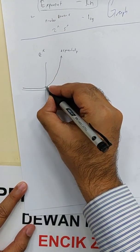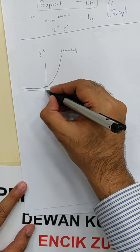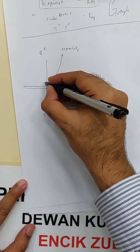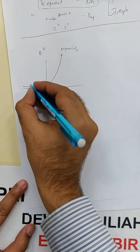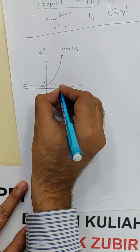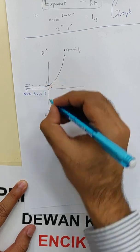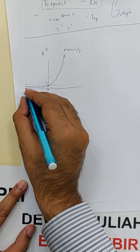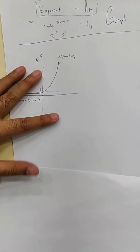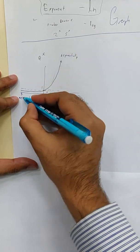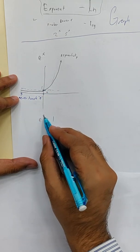Now, what is the value at the intercept? When x is zero, e^0 equals one. So the y-intercept is at one. On the negative side, the graph goes lower but never touches zero — it never touches that line.